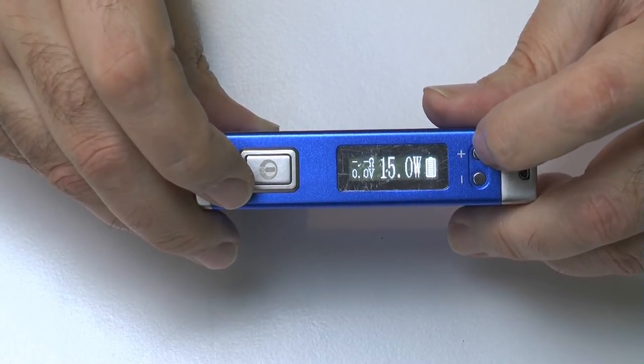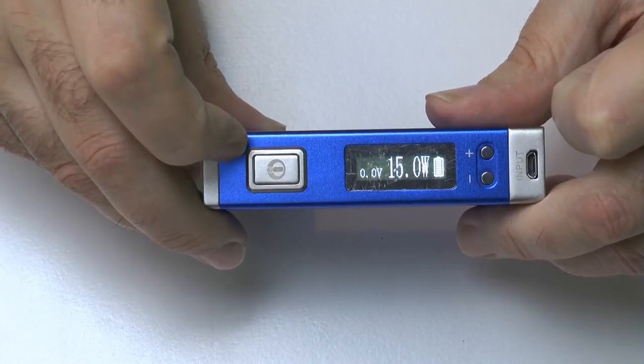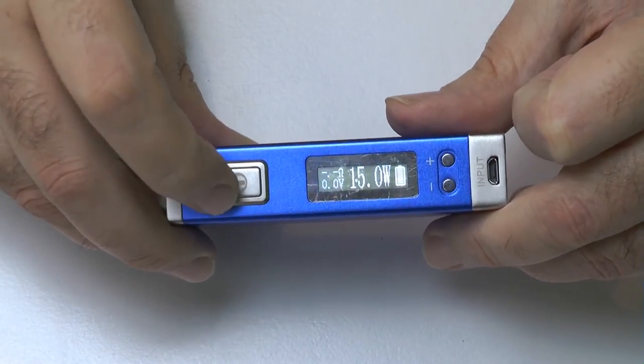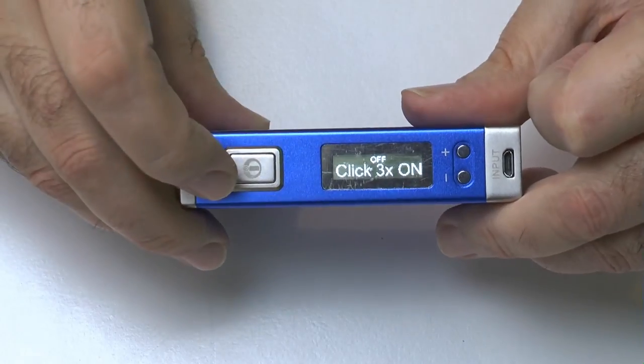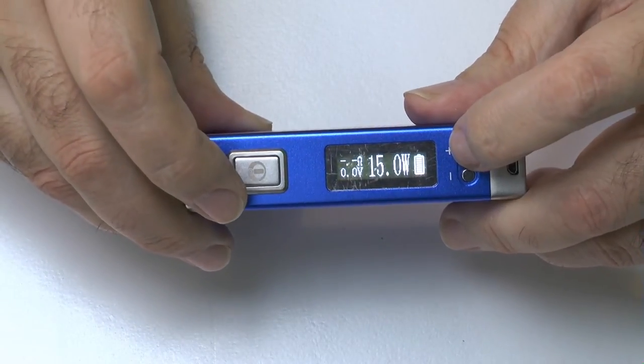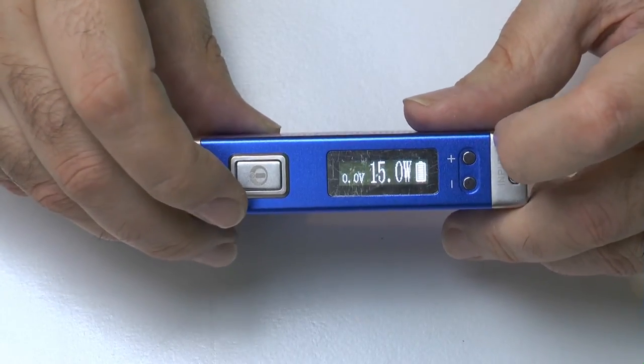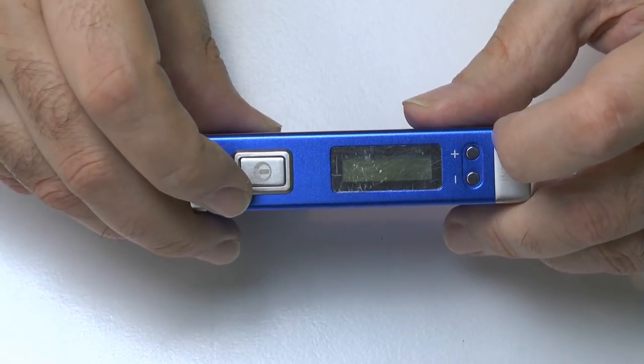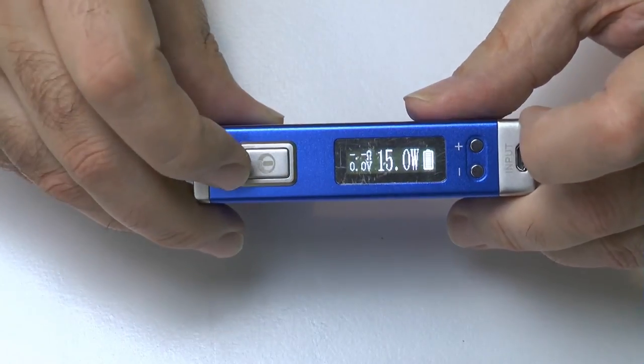So if we take this to say fifteen watts, press fire, that is now locked in place and it will remember that. So if we click it off and then click it back on again, it remembers what you had it set at last, whether that be fifteen watts or six volts, it remembers where you are.